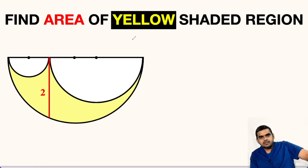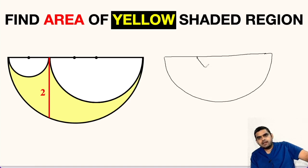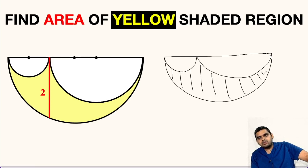In this question, it is asked to find the area of the yellow shaded region. By common sense, we will first compute the area of this big semicircle, then subtract the area of this semicircle, then also subtract the area of this semicircle. The remaining area will be the area of the yellow shaded region, and that will be our approach.